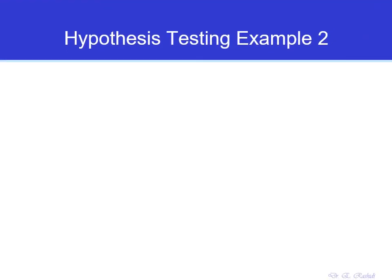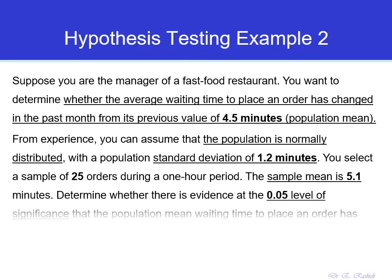Hypothesis testing example 2. Suppose you are the manager of a fast food restaurant. You want to determine whether the average waiting time to place an order has changed from its previous known value of 4.5 minutes. You can assume the population is normally distributed with a population standard deviation sigma equal to 1.2 minutes. You select a sample of 25 orders, and the sample mean is 5.1 minutes. Determine whether there is evidence at the 5% significance level that the population average waiting time has changed.